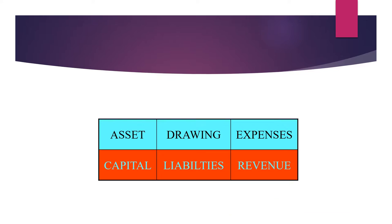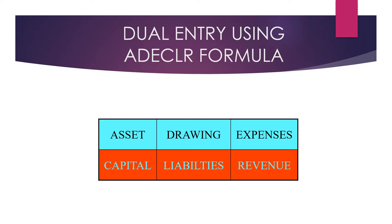We can use a clear formula: Assets, Drawings, Expenses — Capital, Revenue. Whenever assets, drawings, or expenses increase, the account should be debited. Whenever assets, drawings, or expenses decrease from the business, the account should be credited.